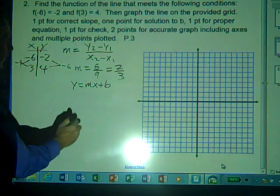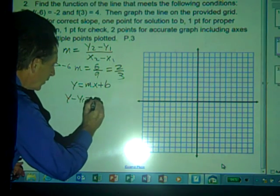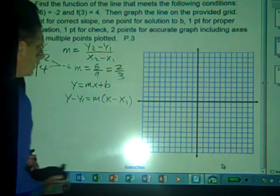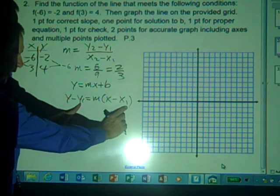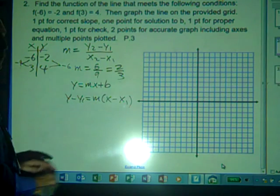But there is a form that's easier, called point-slope form, which is y minus y1 equals m times x minus x1. In this form, we can use one point (x1, y1) and a slope to determine the equation of the line.